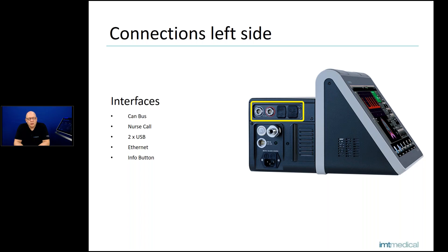The second one is more important: the nurse call. You can connect a remote control which is connected to the alarming system and the nurse call of the ICU, for example. If the Bellavista alarms, the nurse call goes off — this helps if the room where the Bellavista is ventilating is a bit remote, so people are still aware that Bellavista is alarming.